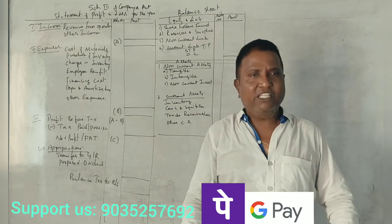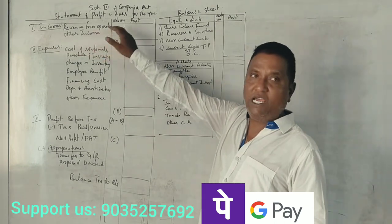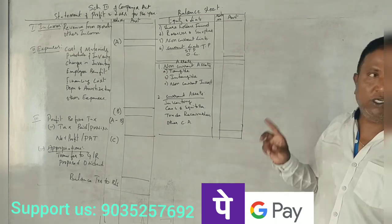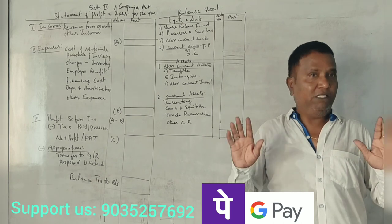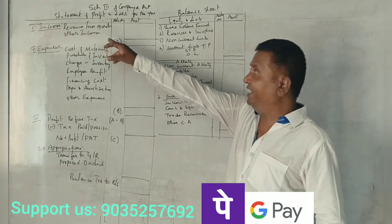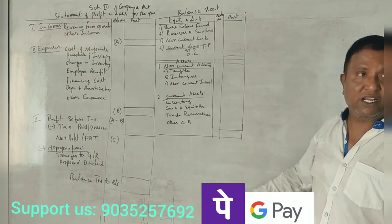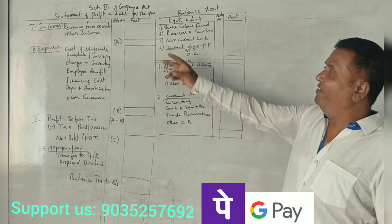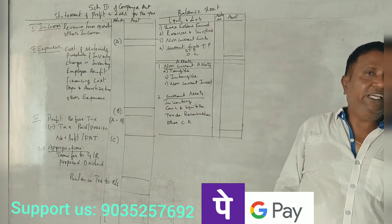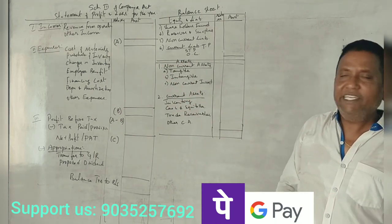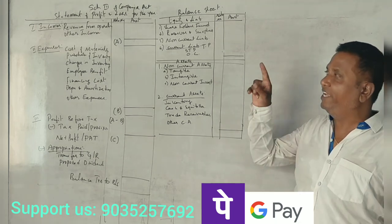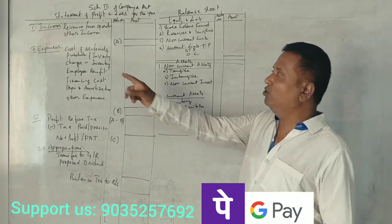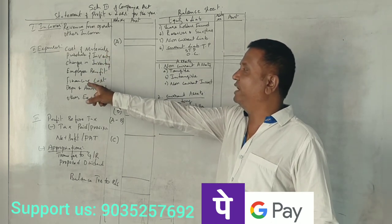Profit on sale of assets is also part of Other Income. We will add income and then add expenses. We will add 7 items under expenses.